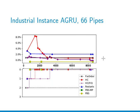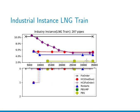A similar plot is shown for the first industrial instance. The previous fixed order algorithm finds a solution with two missing pipes, and all other algorithms improve on that — they can successfully route all pipes and also improve the cost. For the large industrial instance with 200 pipes, a similar picture emerges.